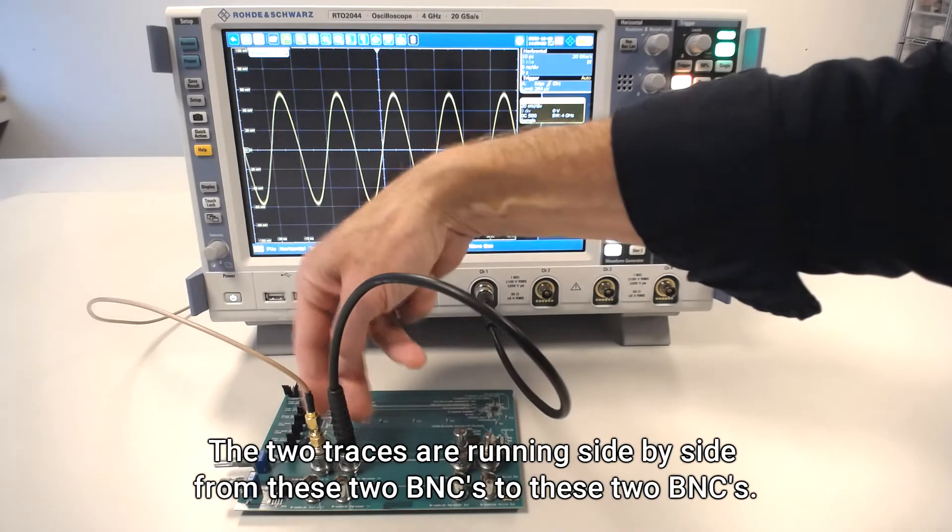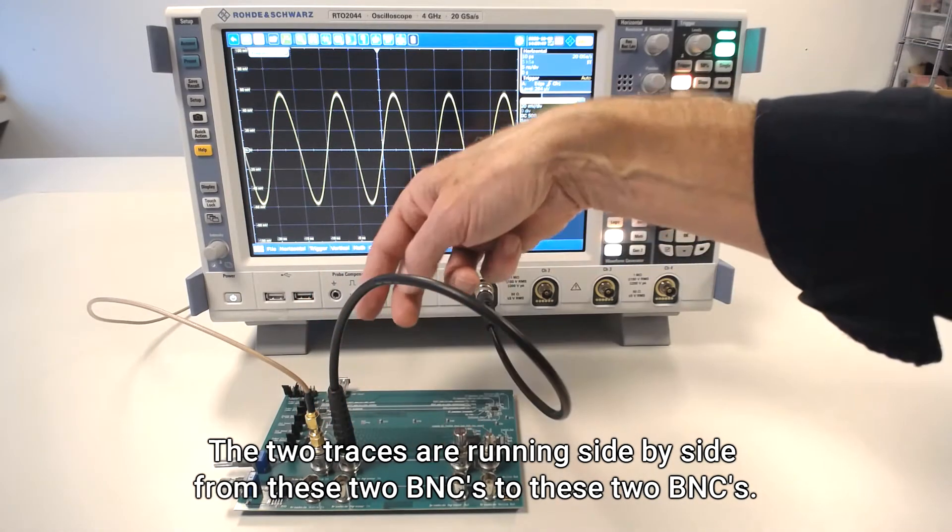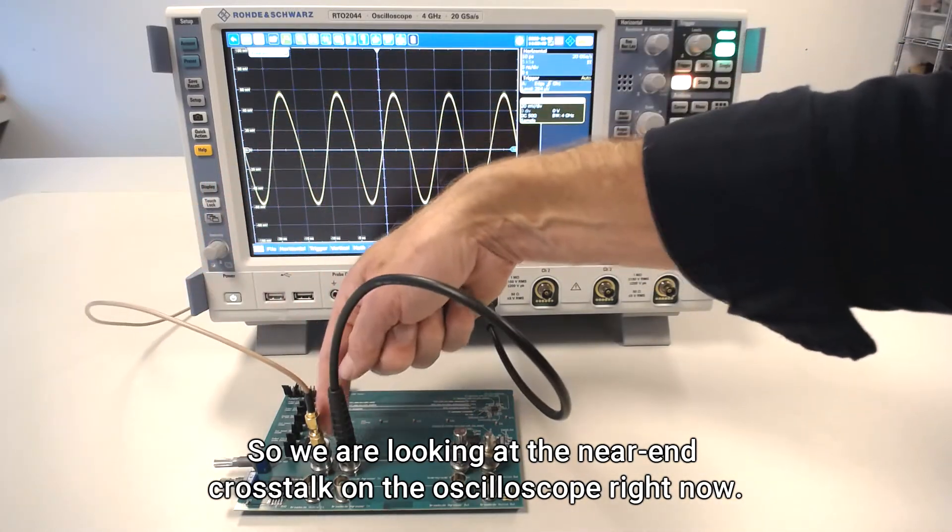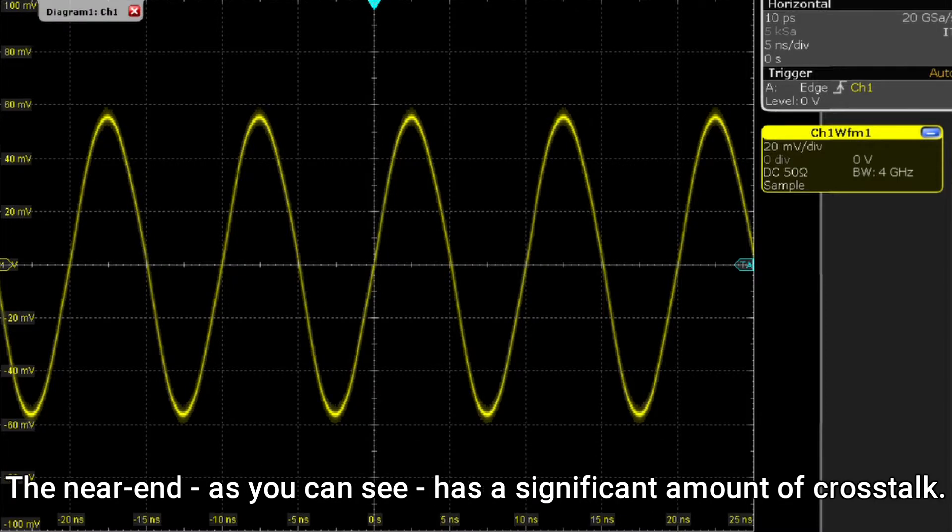So the two traces here are running side by side, from these two BNCs to these two. So we're looking at the near-end crosstalk on the oscilloscope right now. The near-end crosstalk, as you can see, there's some significant amount of crosstalk.